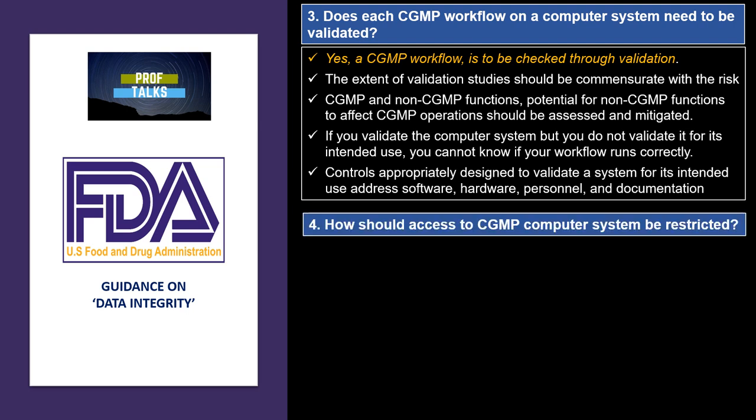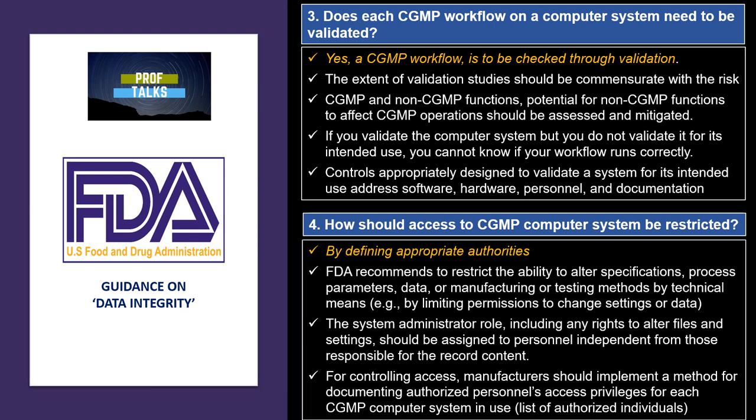The next question is: how should access to CGMP computer systems be restricted? The answer is by defining appropriate authorities. It is the firm's responsibility to maintain a list of authorized persons with roles defined appropriately. FDA recommends restricting the ability of alteration by limiting permissions to change settings or data. The system administrator role should never be given to a person who is responsible for recording the data in the same department — it should be an independent person.